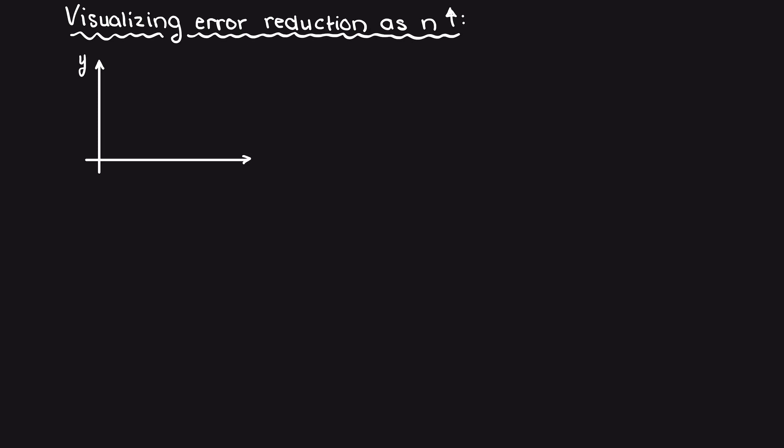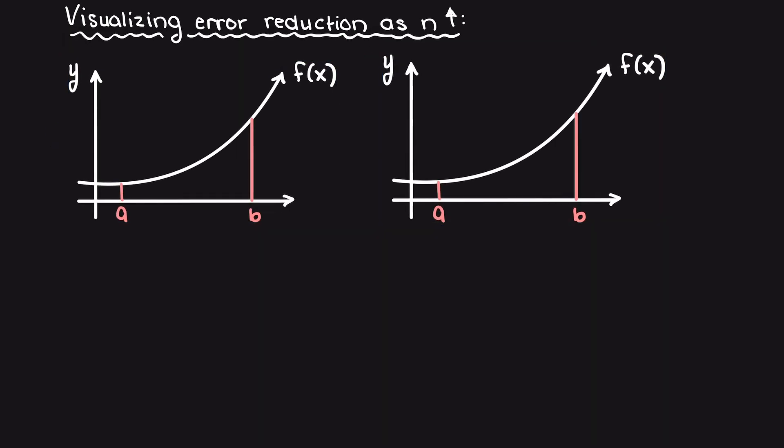Let's imagine that we have two identical functions, one with four subintervals and one with eight. Drawing out our left and right Riemann sums like this, you can imagine this rectangle on the right as a summation of error incurred during each subinterval.